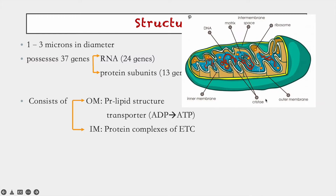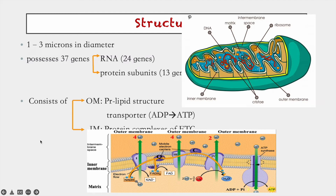Mitochondria consist of an outer membrane and inner membrane, separated by the inter-membrane space that encloses the cristae and the matrix. The matrix contains ribosomes and enzymes of the Krebs cycle. The outer membrane is a protein-lipid structure containing specialized transporters which transfer ADP in and ATP out of the organelle. The inner membrane contains 5 protein complexes which make up the electron transfer chain.